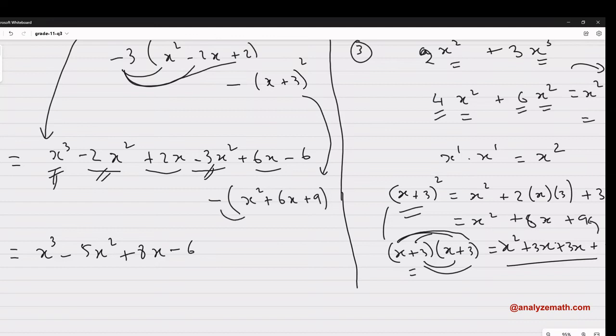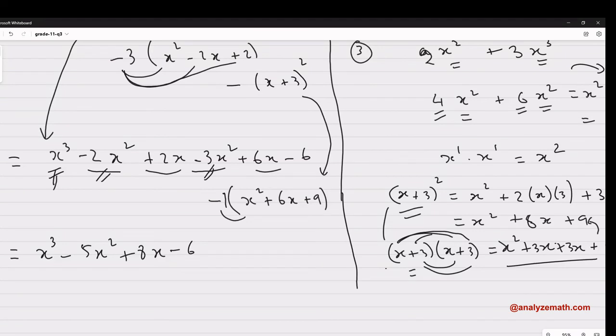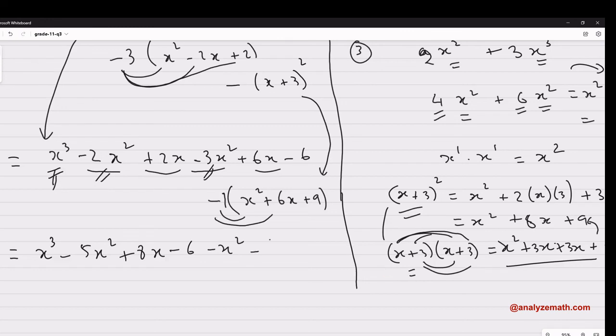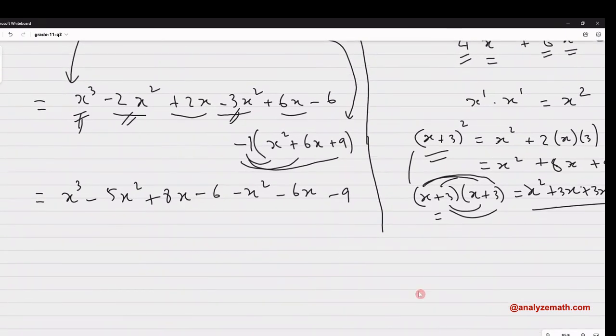Now I go here and I multiply. Remember, this is a negative sign, but it means it's a minus 1 multiplied. So minus 1 multiply by x² minus x². Minus 1 by 6x minus 6x. Minus 1 by 9 minus 9. Now we continue.